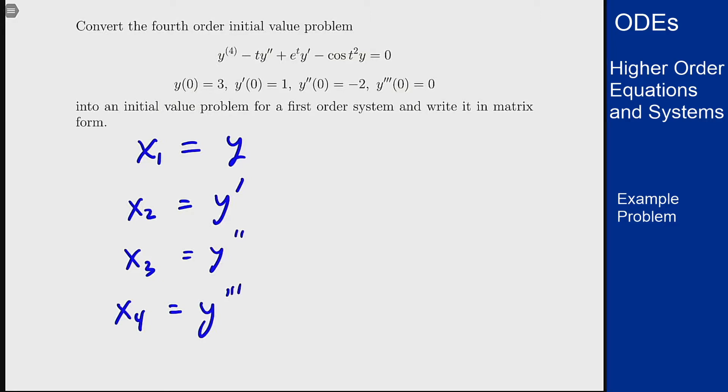I don't need any more because I can write the fourth derivative of y in terms of lower derivatives using the equation. Here I know this is going to be t times y double prime minus e to the t y prime plus cosine of t squared times y and so I don't need any more than these four here to say what's going on.